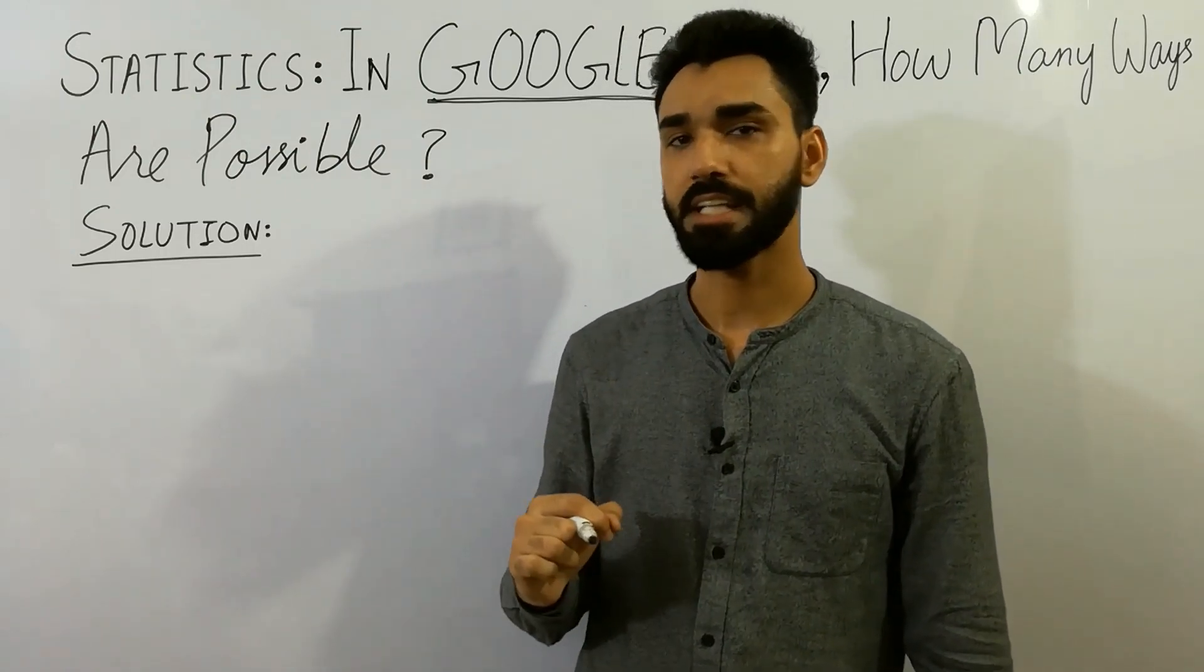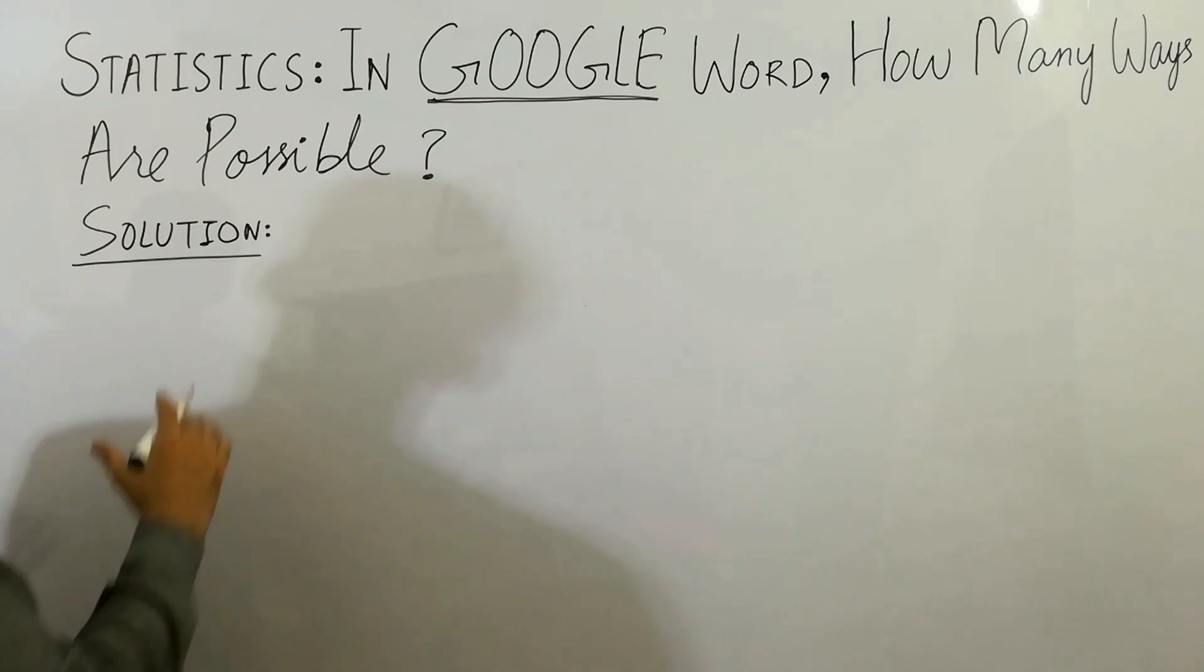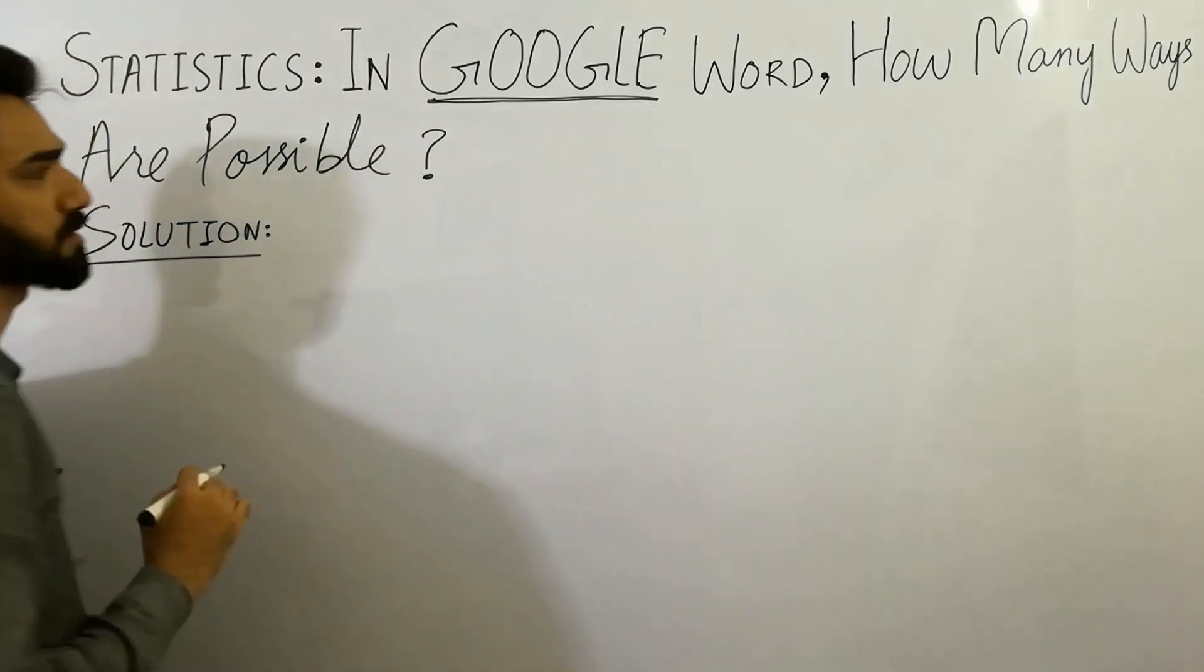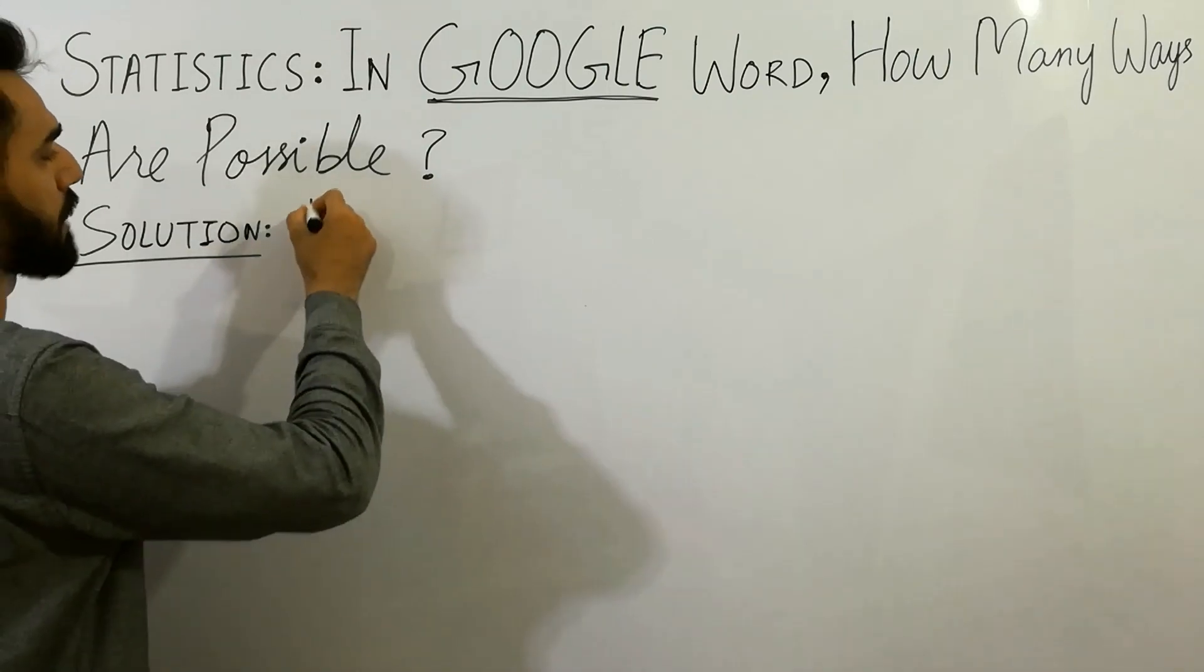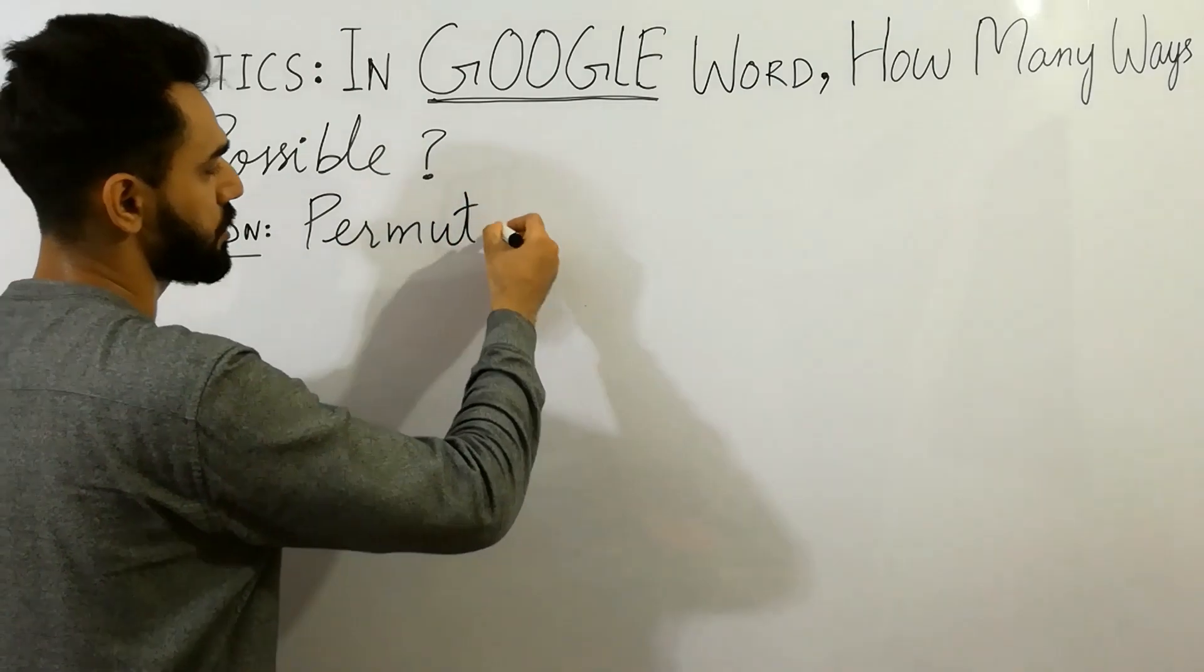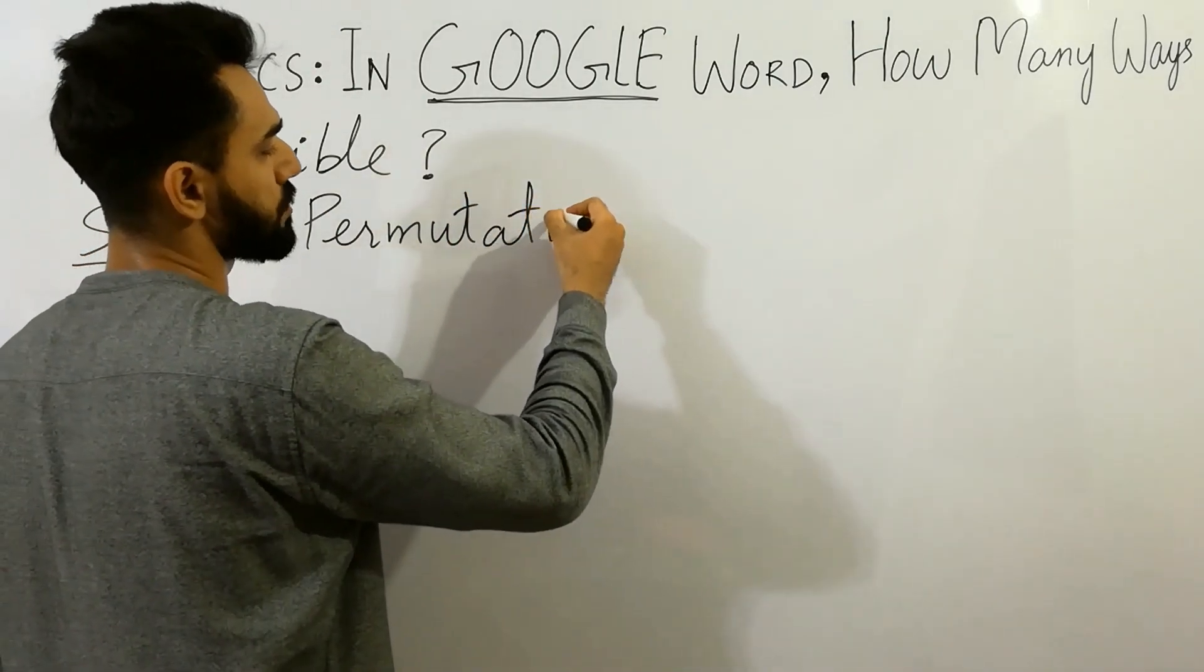So without wasting any time, let's talk about this. So here, the question is: in Google Word, how many ways are possible? Do you know about permutations? By permutations, you can easily solve this question.